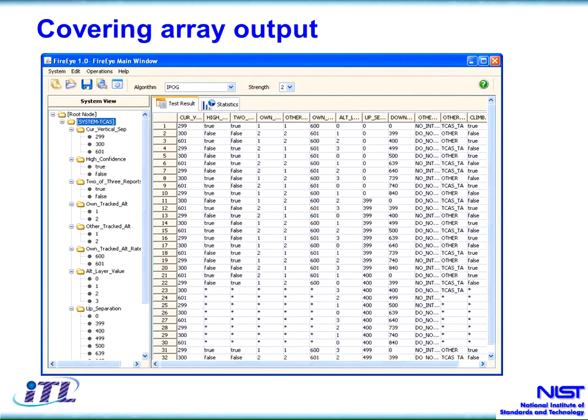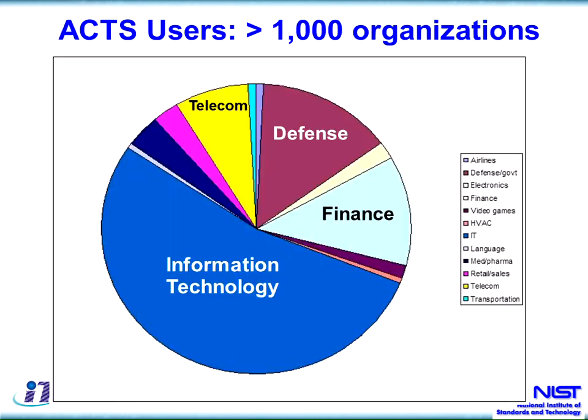The tool output shows each row as a test and each column as a variable with corresponding values. We have a large number of users, strong in IT of course, but also defense, aerospace, and finance. I know what the Air Force is doing with it and what weapons they're testing, but I don't know anything about what the finance users are doing — though they really like this. Telecom is another case where you've got very complex software with a lot of money riding on it.